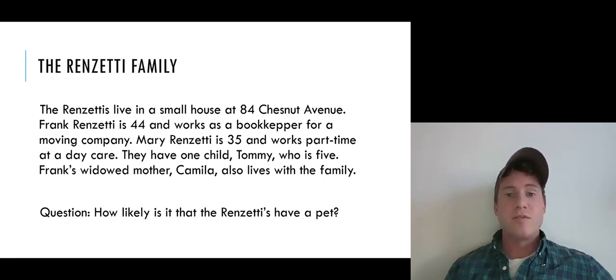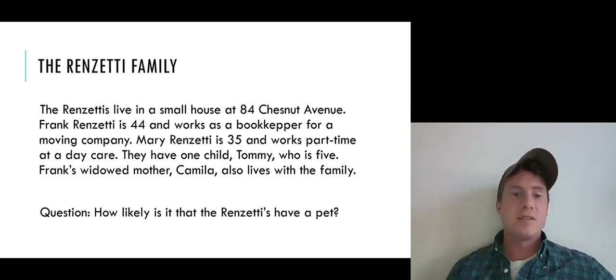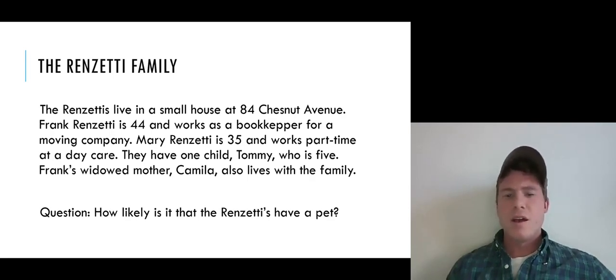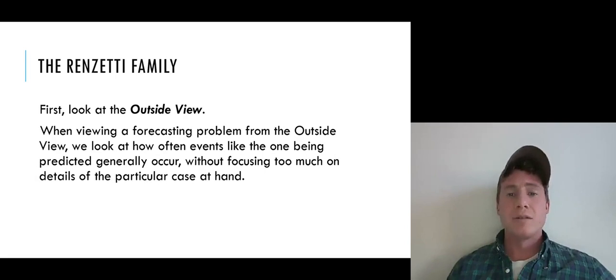When you first come across this description of this family and this question, you might be tempted to try to initially focus in on the specific details of this family to try to gauge how likely you think they are to have a pet. So you might try to weave some story together from the fact that Renzetti is an Italian name, and so they're Italian-Americans and they live with their widowed mother. And maybe you weave some story about that such families are more likely to have pets or less likely to have pets than generic families. But that might not be the best way to start thinking about answering this question. It might be better to first look at what we call the outside view.